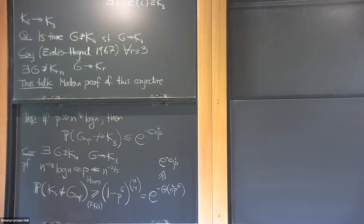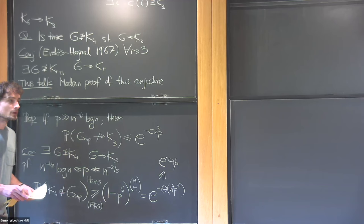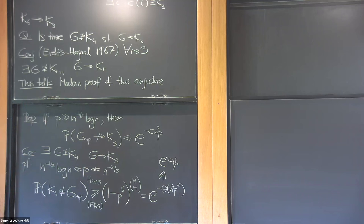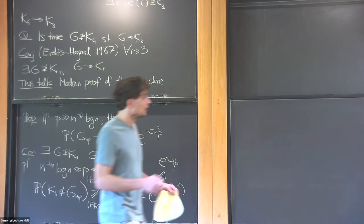Are there any questions? Please feel free to interrupt me if something is unclear — we have plenty of time. Is there a way to ask for an explicit construction? Yes; I believe Folkman's original construction was explicit, but all the constructions that followed, at least that I'm aware of, use some probability.